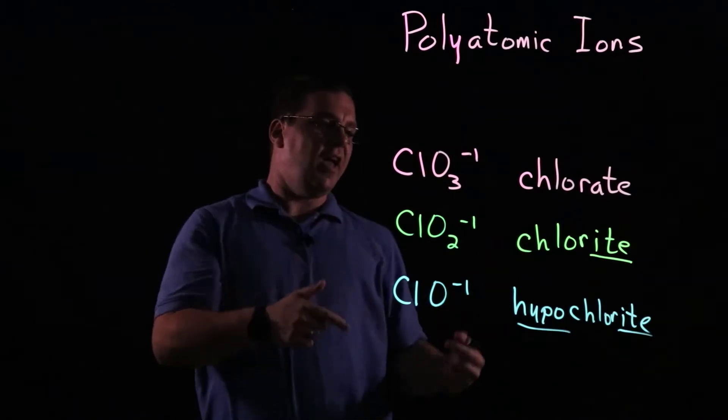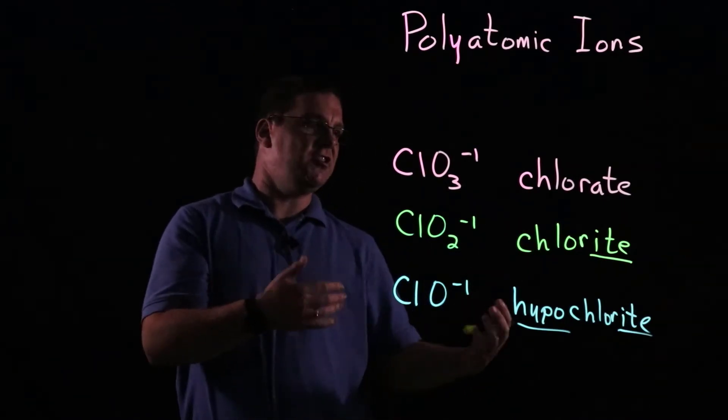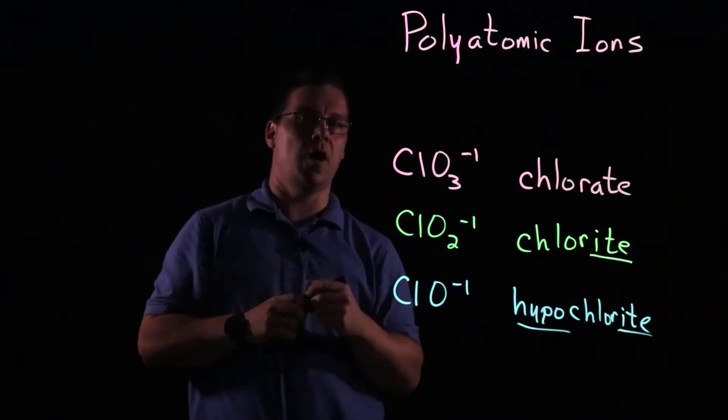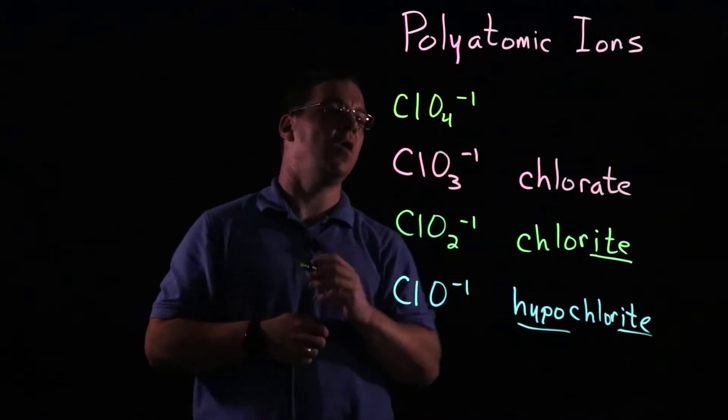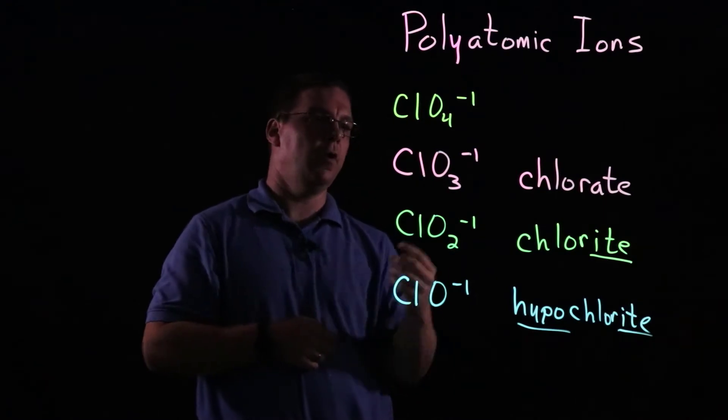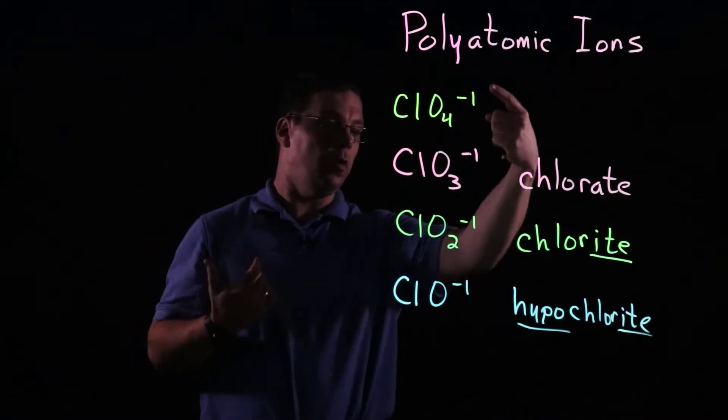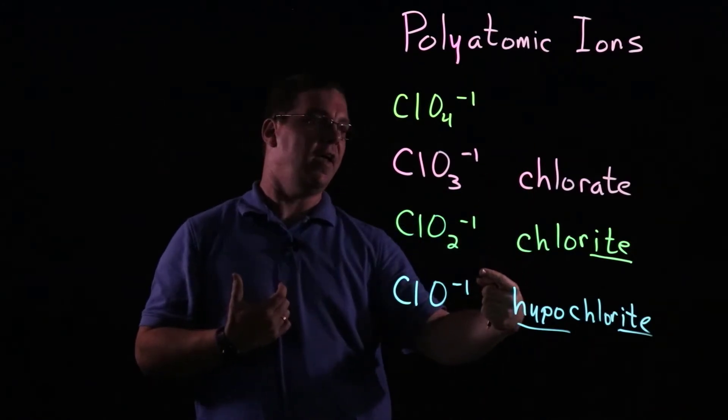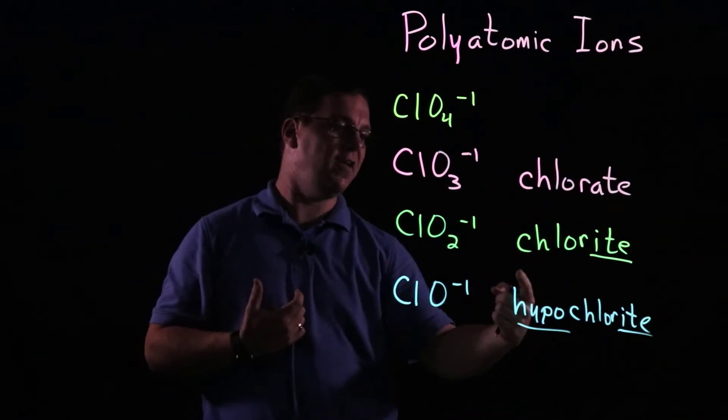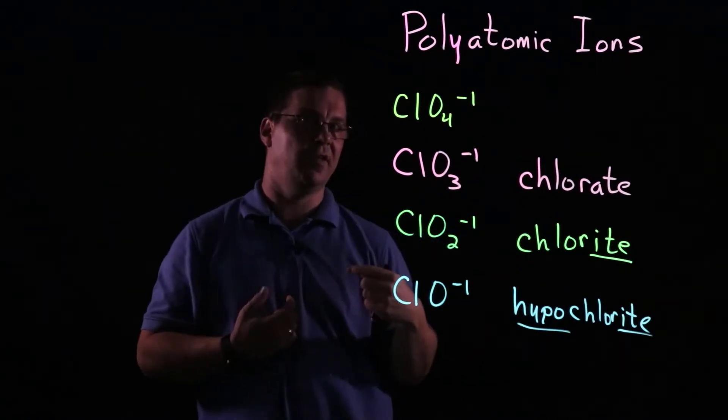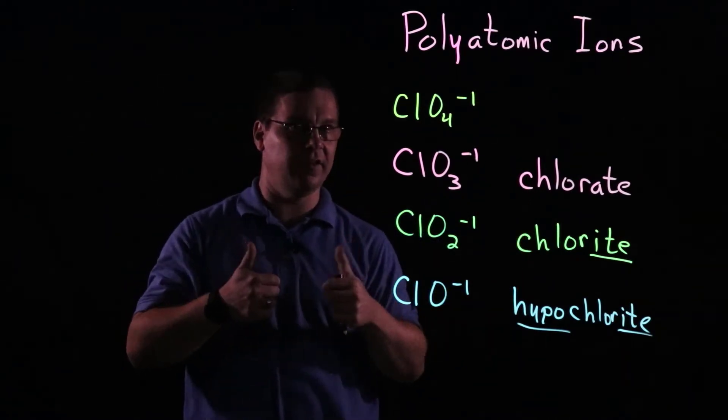So in these cases, we've taken an oxygen away and changed the name. But what happens if we add an oxygen to the common form? And so in this case, you can see still dealing with chlorine. We've now added one oxygen, and again, the charge is the same. So that's nice. Anytime you have a set of polyatomic ions based on a given element, the charges of those respective polyatomic ions, that doesn't change.